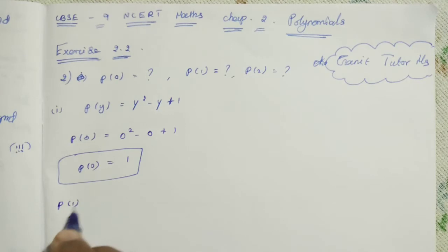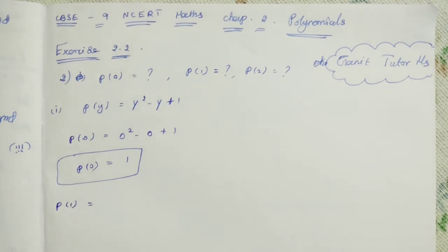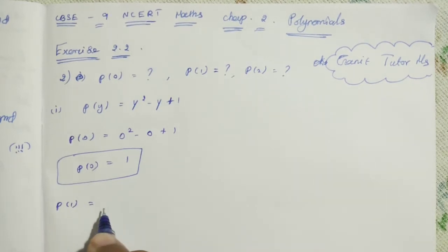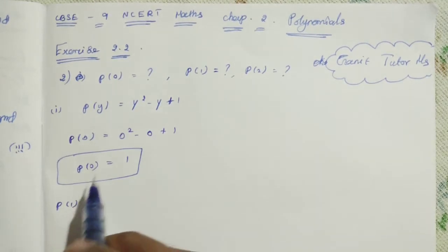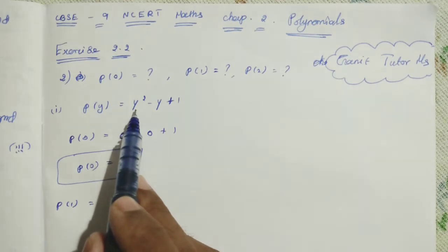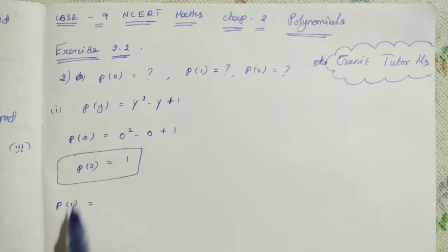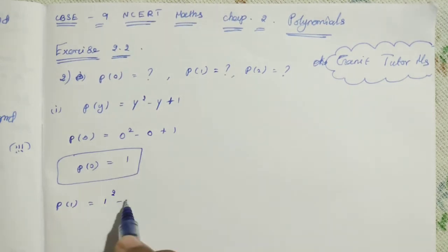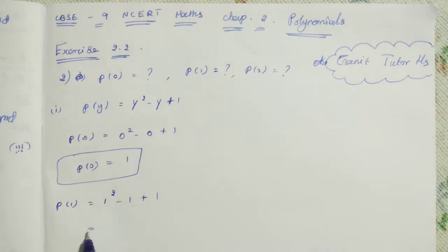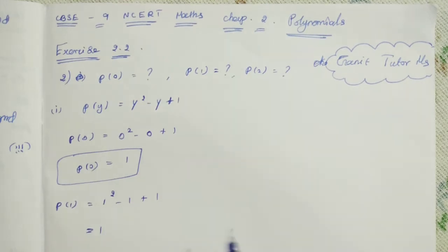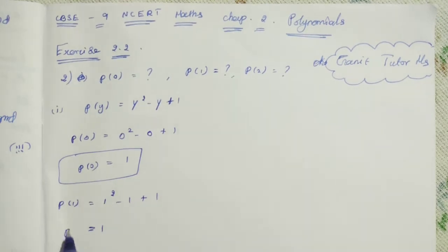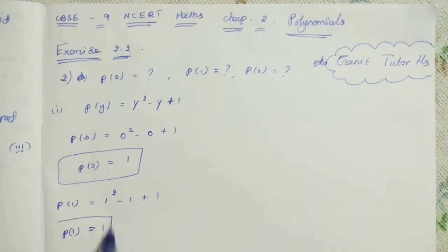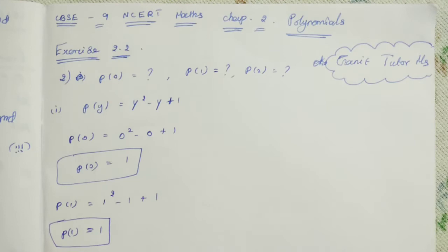Next, P of 1. Now, instead of the y value, you can substitute a 1 in the same polynomial. So: 1 squared minus 1 plus 1. 1 squared minus 1 plus 1 — the minus 1 and plus 1 cancel. So P of 1 value is 1.